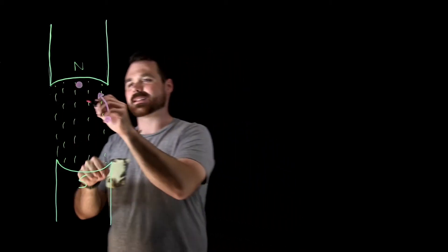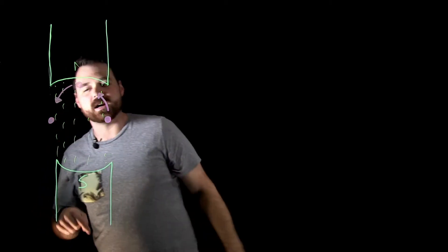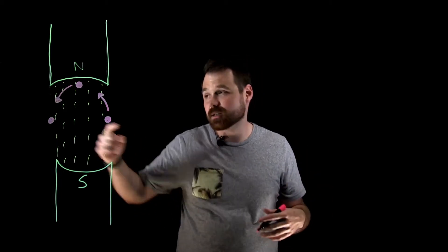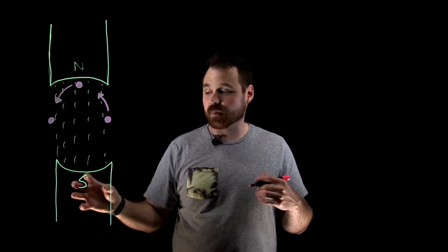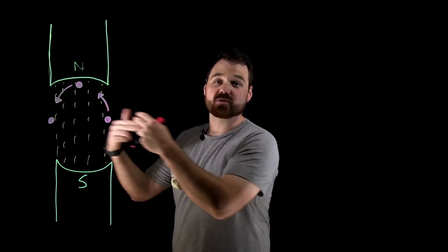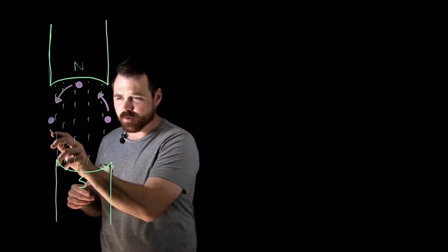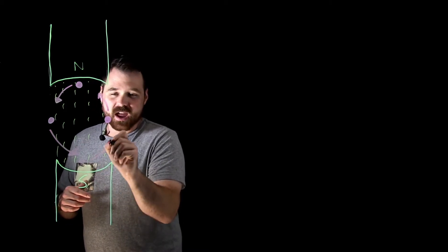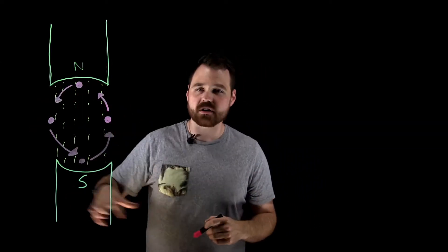I keep rotating and I'm going to get less and less. I keep rotating and eventually my conductor reaches down here where again I'm not going to be cutting any magnetic lines of flux. Keep rotating — I'm cutting more and more until I'm cutting a lot of flux down by the south pole, which is actually going to cause current to flow in the opposite direction, or my induced voltage is going to be opposite inside that conductor. I keep rotating, rotate down, and then again I get back to where I start. So I'm just rotating this conductor through the magnetic field.